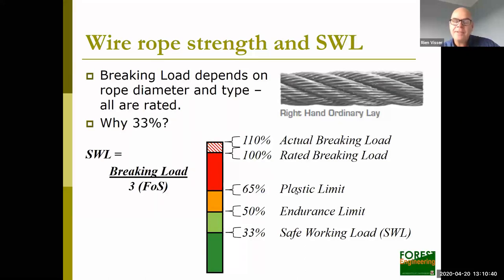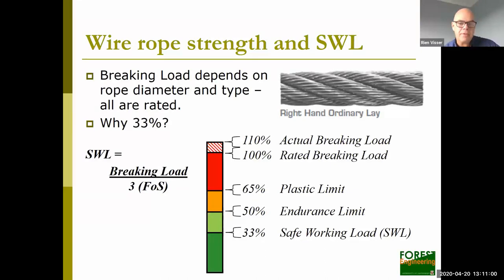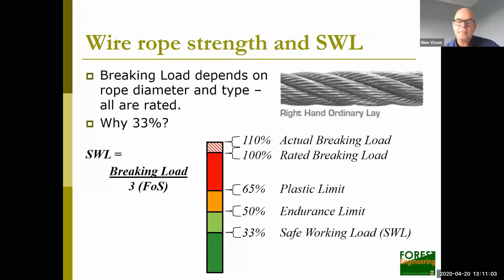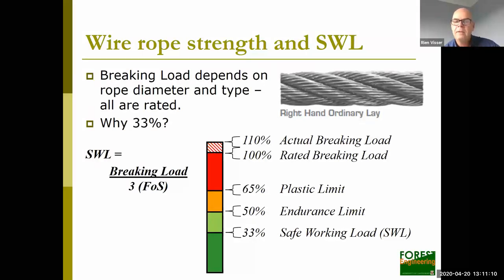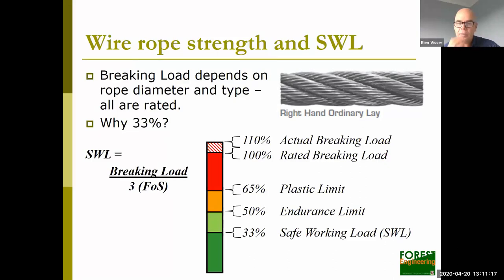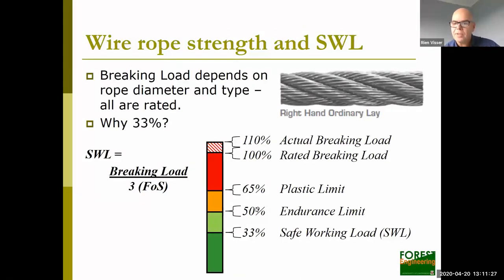The plastic limit is another important number — it's about 65% of the breaking strength of the rope. This is important because when we exceed about 65% of the rated breaking load, we actually start to damage the rope. It won't break immediately, but it will break over time. So for a 10-ton rope, loading it up to 6.5 ton would start to cause damage, and it will break relatively quickly after that.